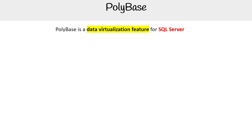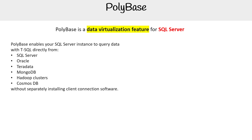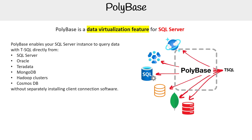Let's take a look here at PolyBase. This is a data virtualization feature of SQL Server — specifically Microsoft SQL. PolyBase enables your SQL Server instance to query data with T-SQL directly from SQL Server, Oracle, Teradata, MongoDB, Hadoop clusters, and Cosmos DB, without separately installing client connection software.